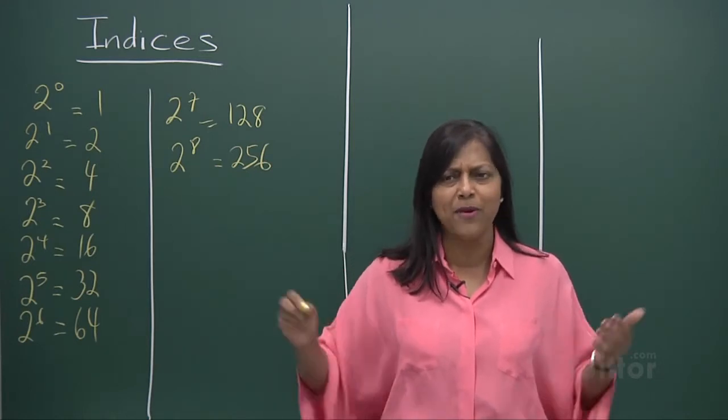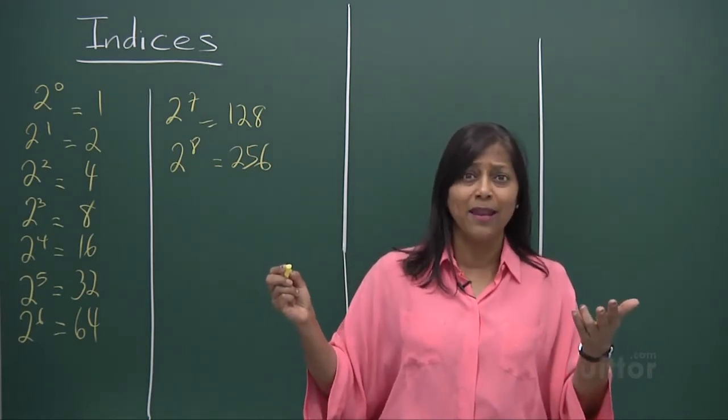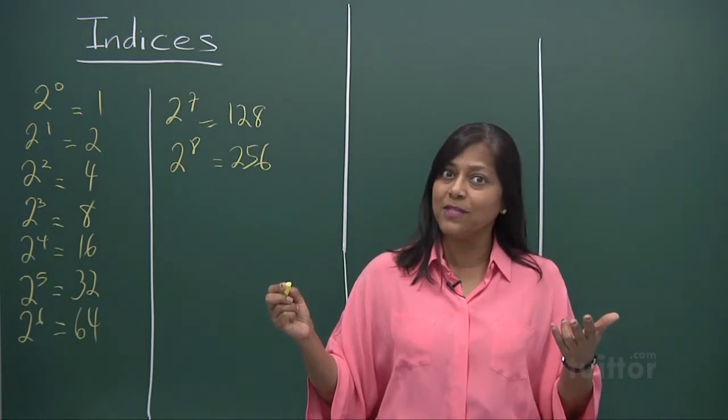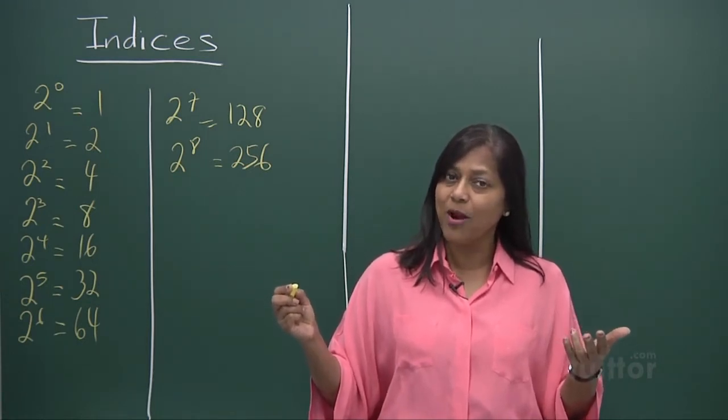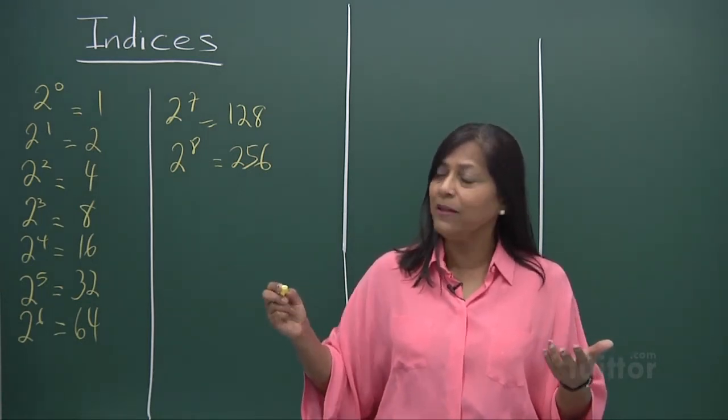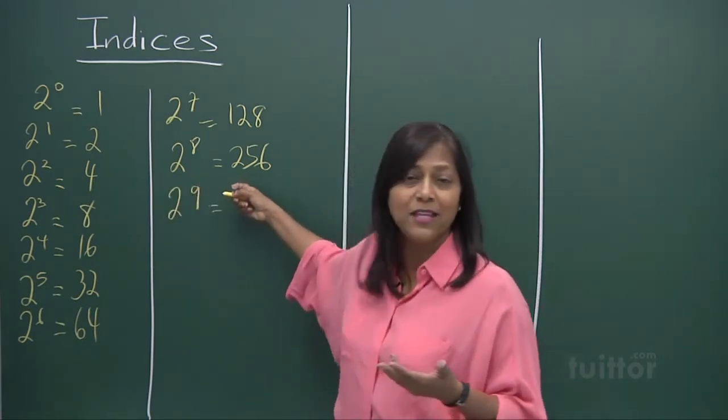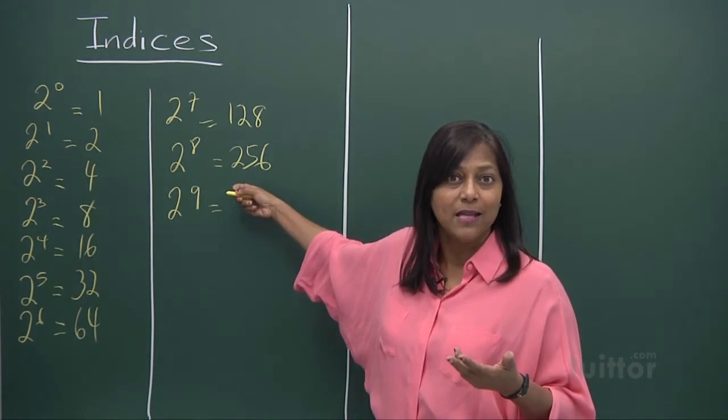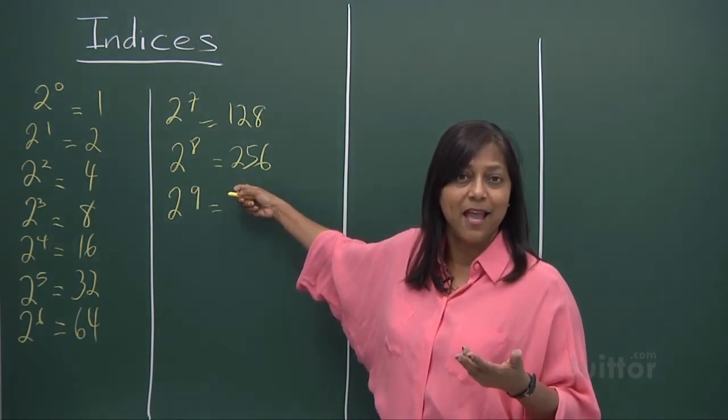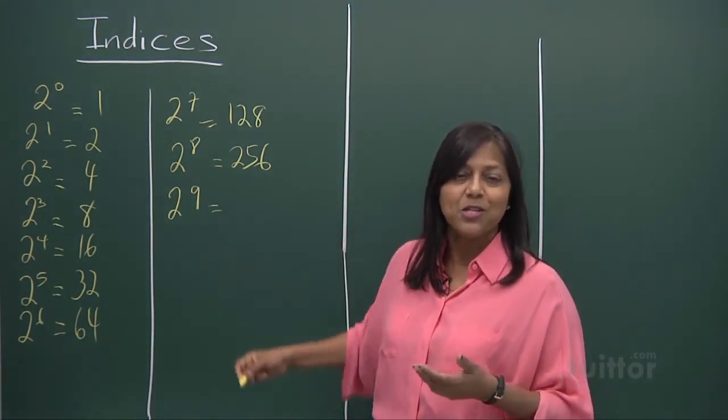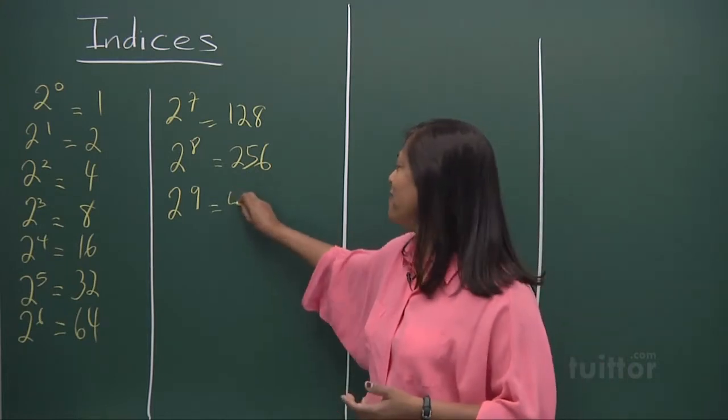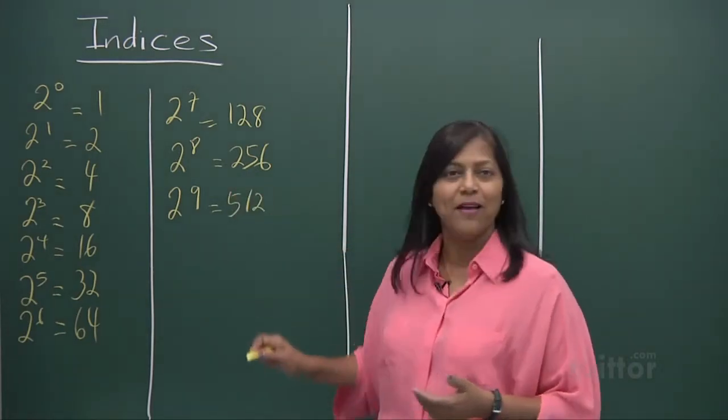Let's look at 2 to the power of 9. Guess what? You got it? Yes, 256 plus 256. A double effect on that is 250 times 2 is 500. A 6 and a 6 is a 12. So you've got 512. Excellent.